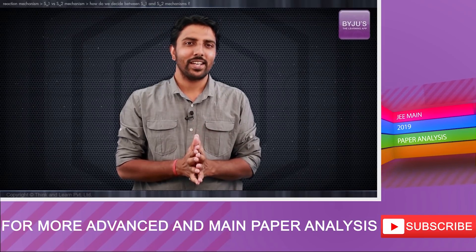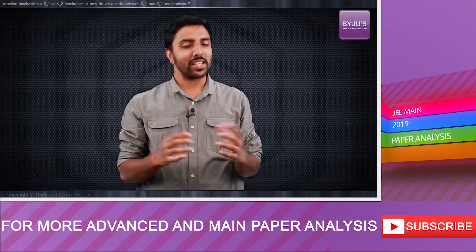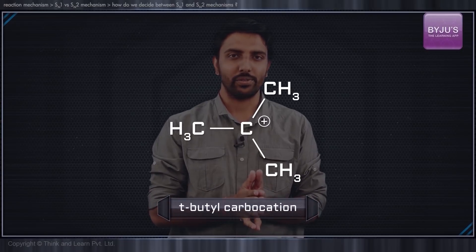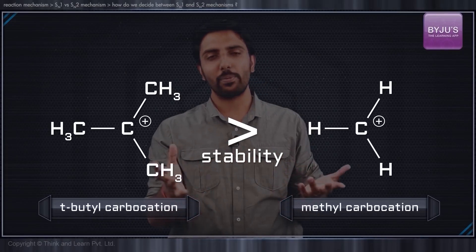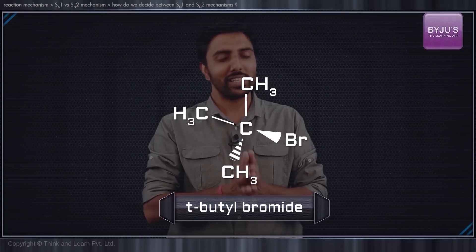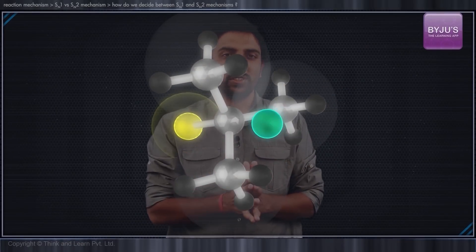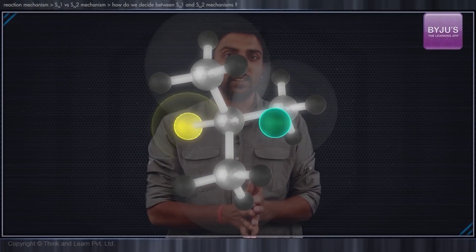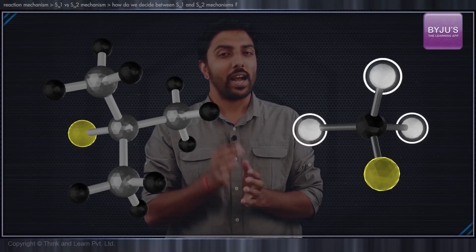Interestingly, the structural factors which make carbocations unstable are also the factors which lead to faster SN2 reactions. For example, the tertiary butyl carbocation is much more stable than the methyl carbocation because of inductive as well as hyperconjugation effects. But tertiary butyl bromide is a poor candidate for an SN2 reaction because the nucleophile will have to manoeuvre its way into the carbon centre through the alkyl groups. Hence, it is always ideal for an SN2 reaction if there are only small hydrogen atoms at the carbon centre.